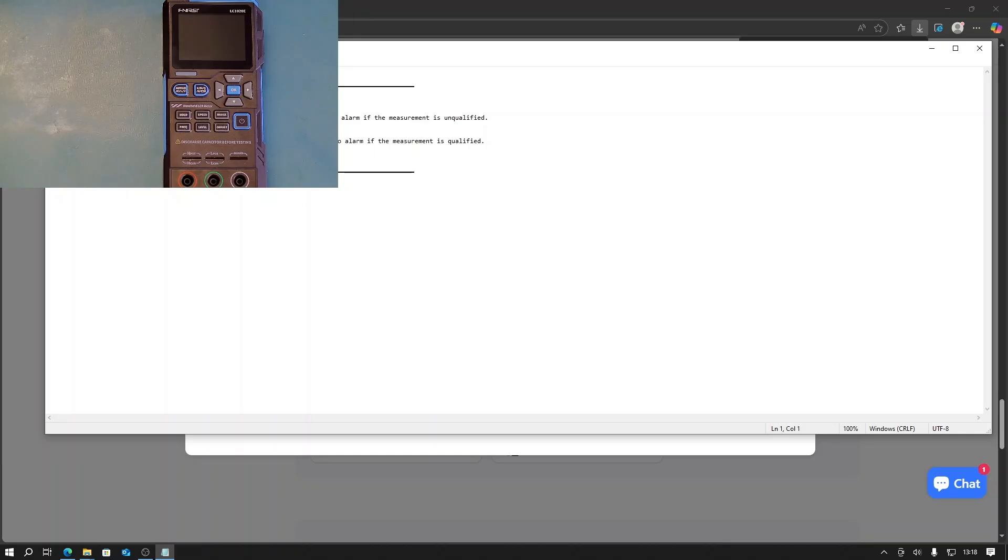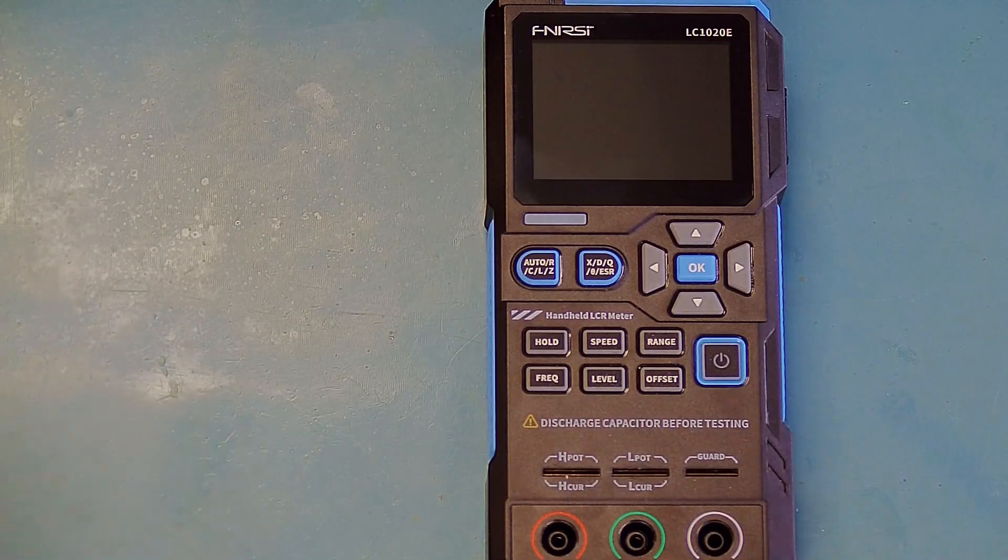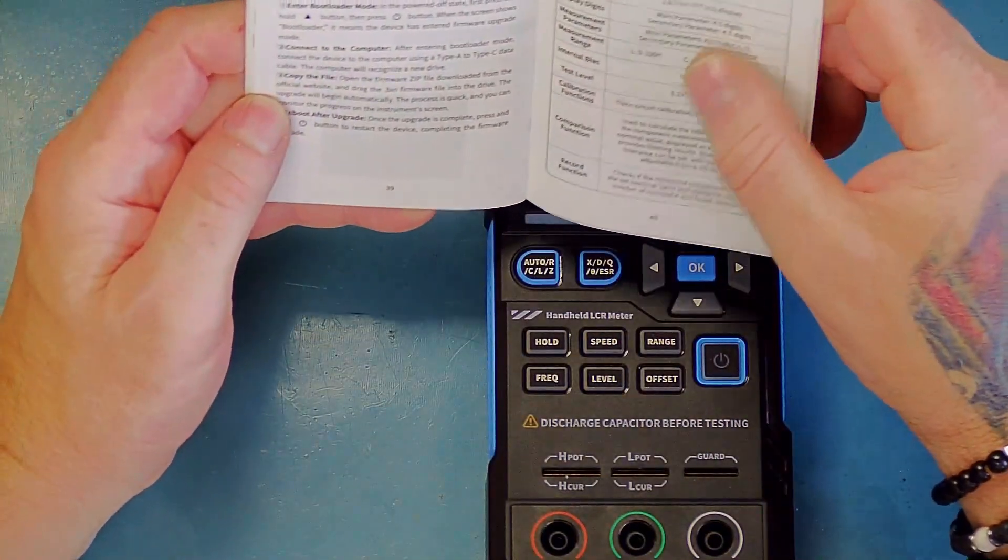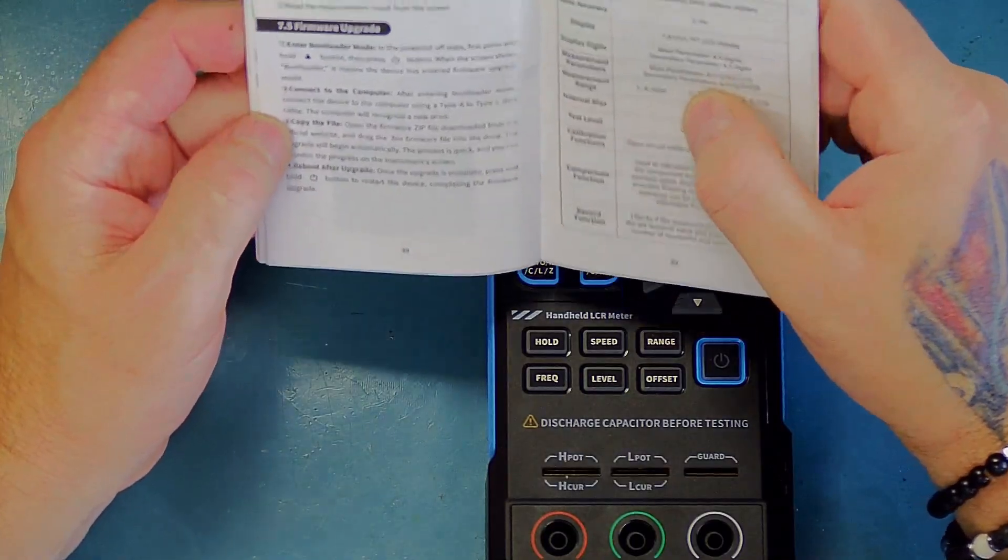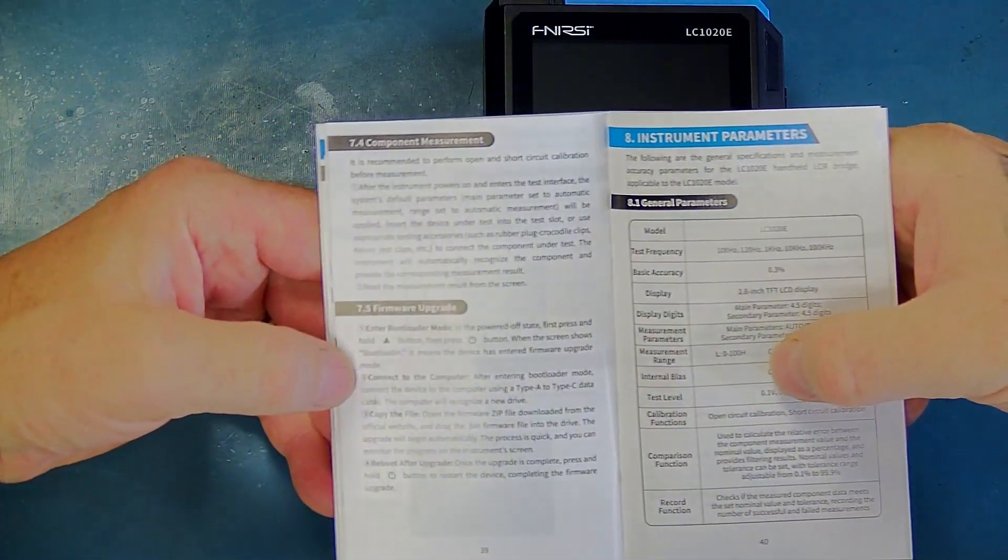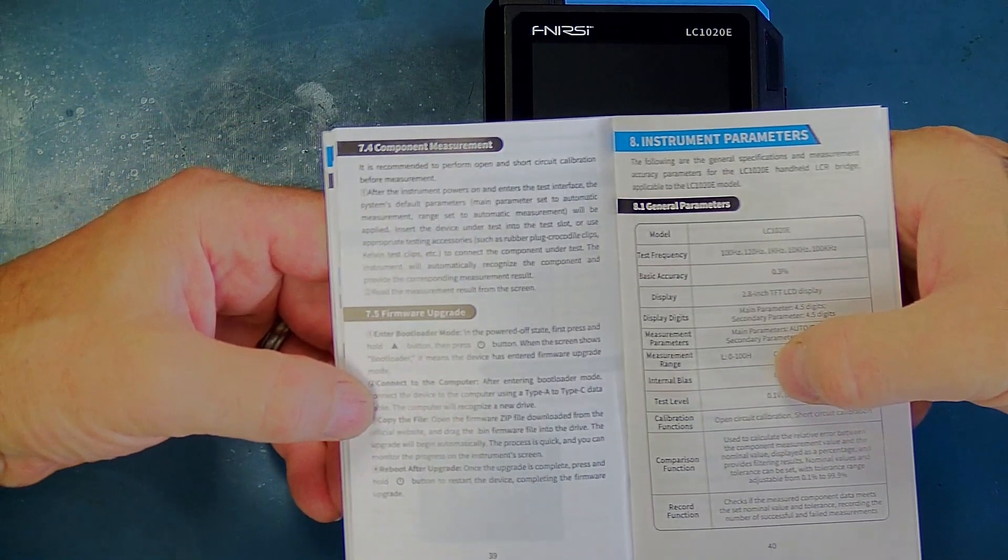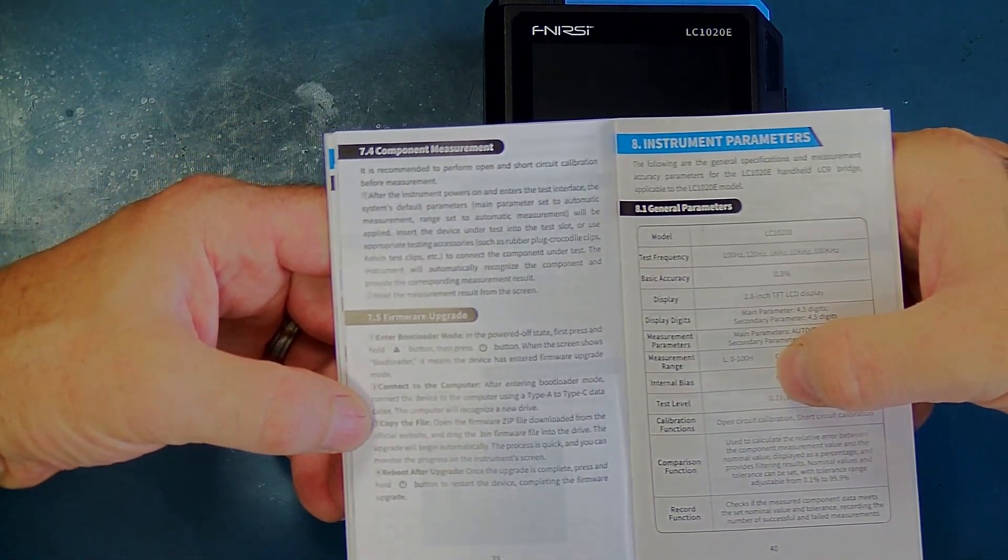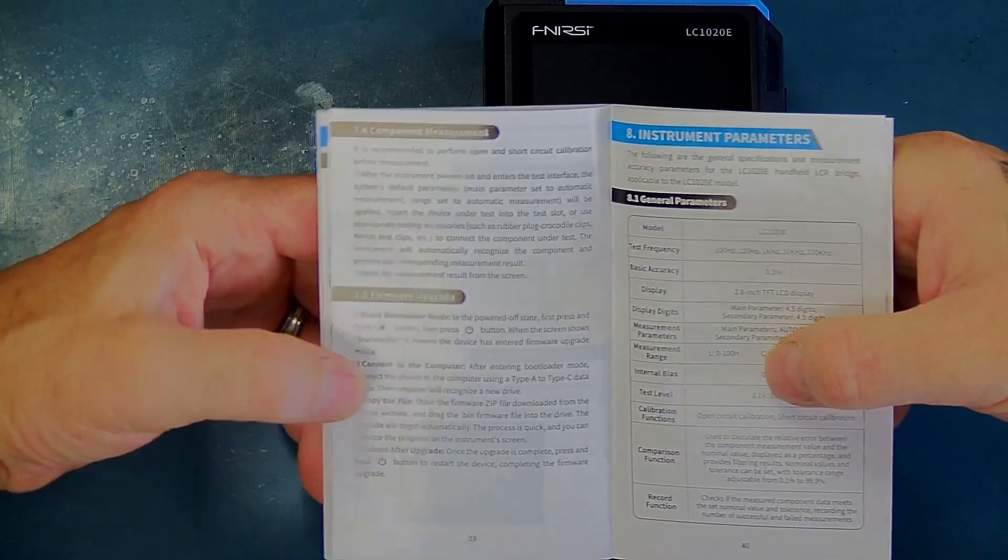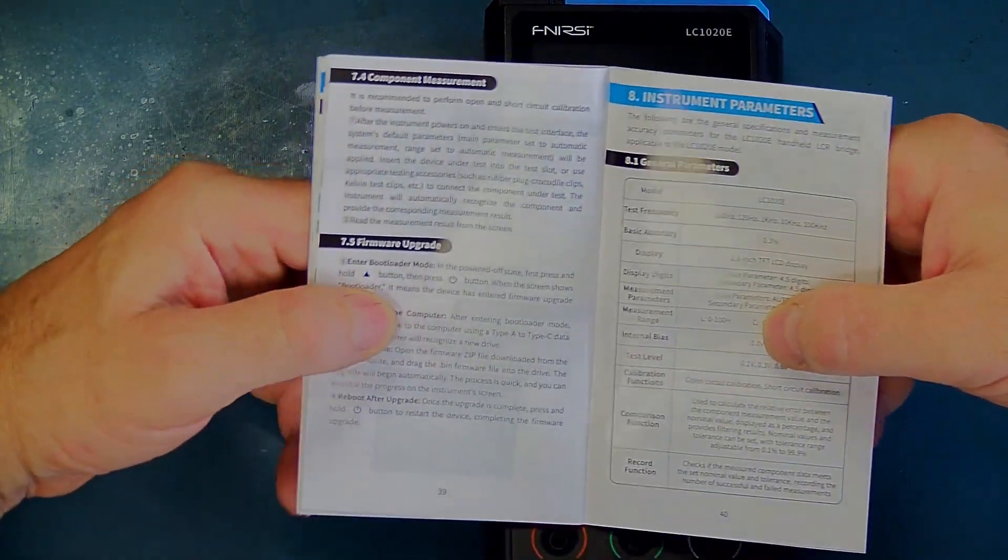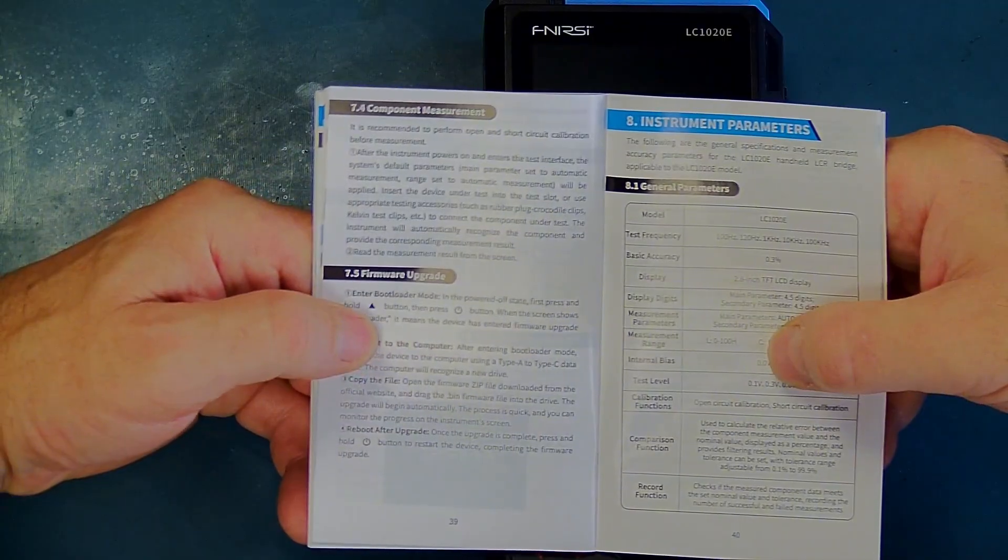Okay, so according to the manual, to do the firmware upgrade we need to put the device into bootloader mode, connect it to the computer, then copy the file and reboot. Let's go ahead and do that. To go into bootloader mode, it says...